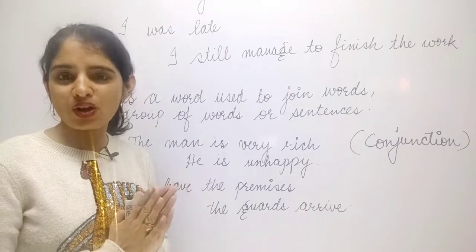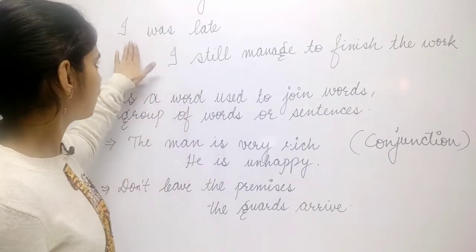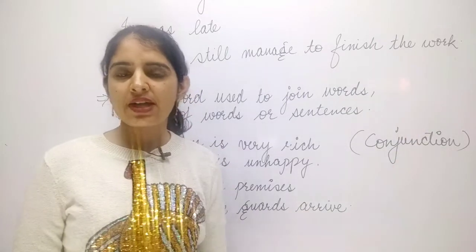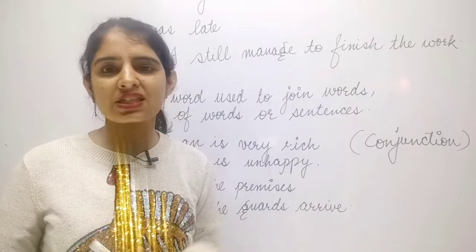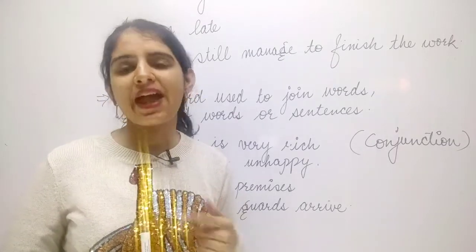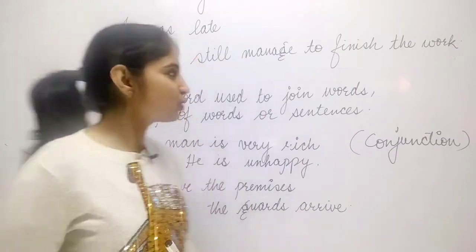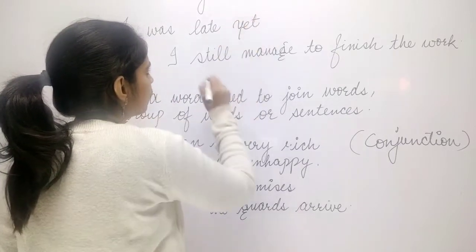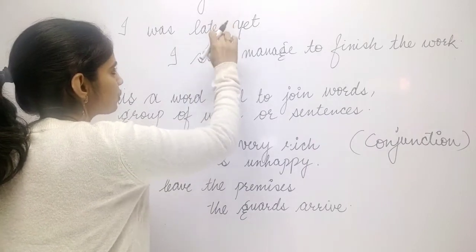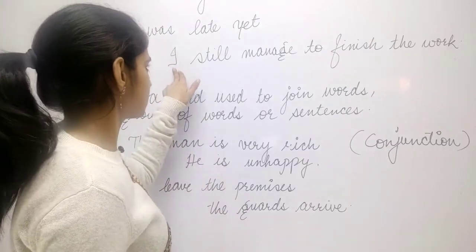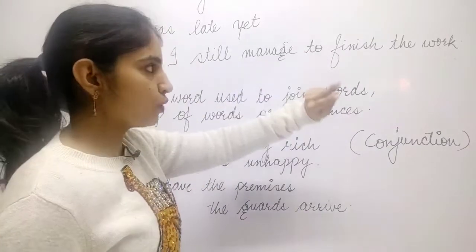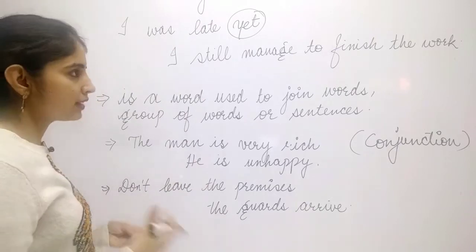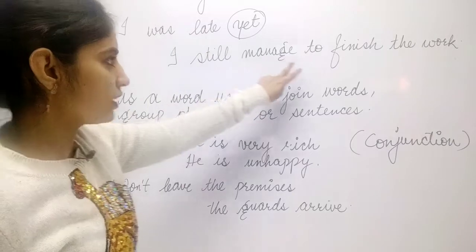For example, I have written here: 'I was late' and 'I still managed to finish the work.' I have two sentences, but I want to combine them into one sentence. I need a word — that word is our conjunction. So I can say: 'I was late yet I still managed to finish the work.'